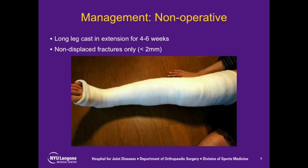With respect to management, type 1 fractures can typically be treated non-operatively in a cylinder cast with the knee in full extension for a period of 6 weeks. Non-operative treatment requires that the fracture fragment reduces with the knee in extension with less than 2 mm of displacement accepted. The reduction is evaluated on the lateral radiograph with the knee in full extension, and comparison of the position of the tubercle and patella are made to radiographs of the contralateral knee. If greater than 2 mm of displacement remains with the knee in extension, then operative treatment is indicated.